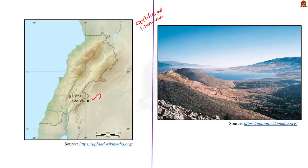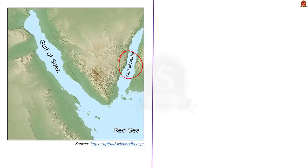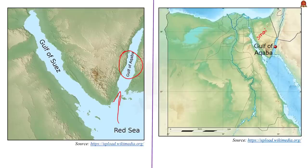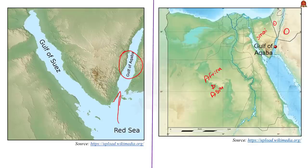Moving on to the Gulf of Aqaba: a gulf is a part of the sea almost surrounded by land. The Gulf of Aqaba is located on the northern tip of the Red Sea. East of it is the Arabian Peninsula and west of it is the Sinai Peninsula, which is part of Egypt. Interestingly, the Sinai Peninsula is part of the Asian continent, meaning Egypt has territories in both the African and Asian continents. The Gulf of Aqaba's coastline is divided among four countries: Israel, Jordan, Saudi Arabia, and Egypt.